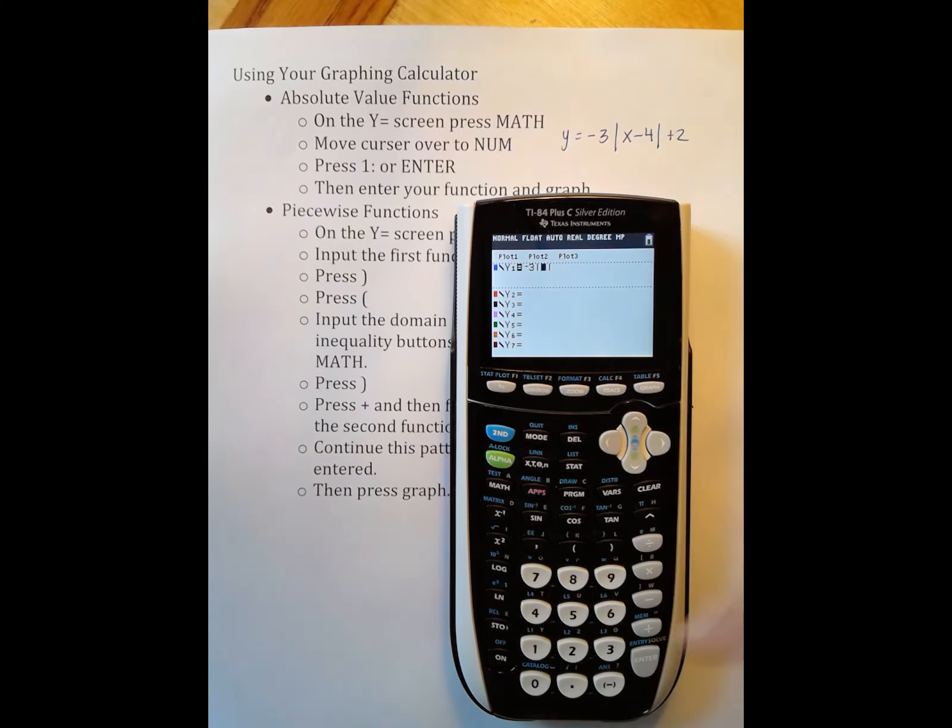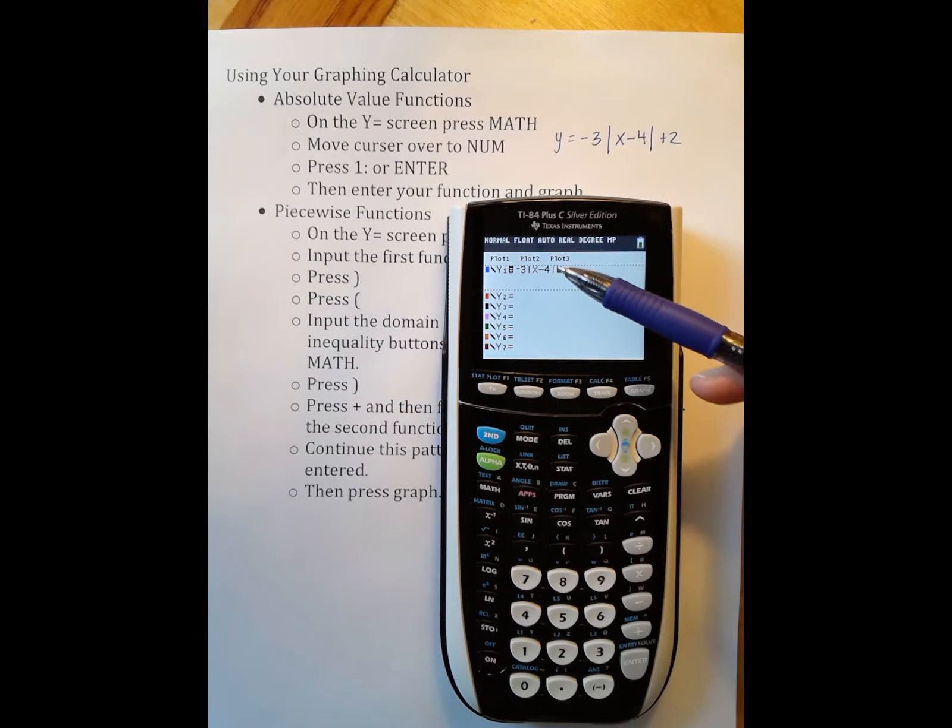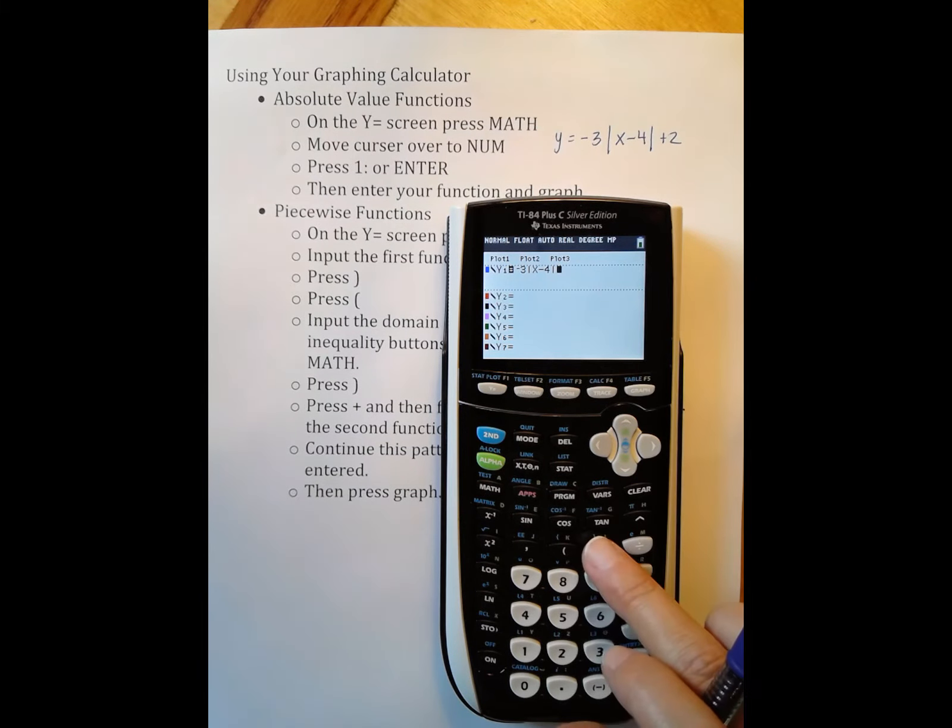Then I fill in the part that's in my parentheses, my absolute value. Your calculator may need you to close parentheses at this point. That button is above the 9, or it may not. And then you have plus 2 on the outside of the absolute value, and then press graph.